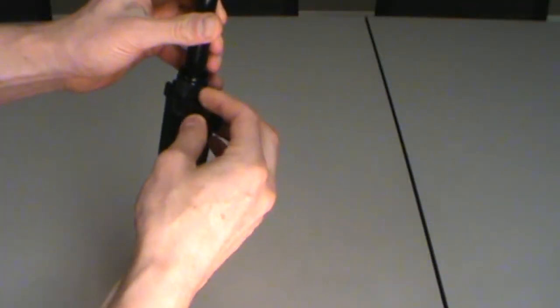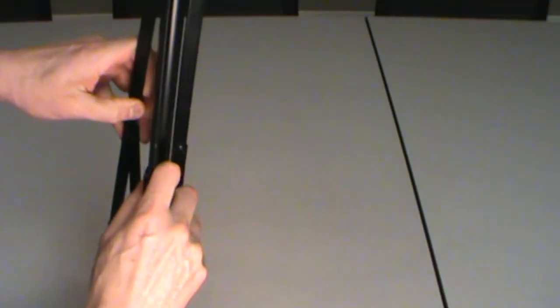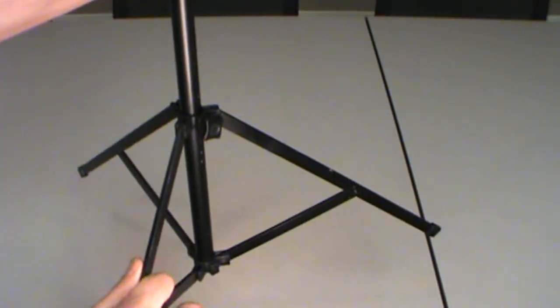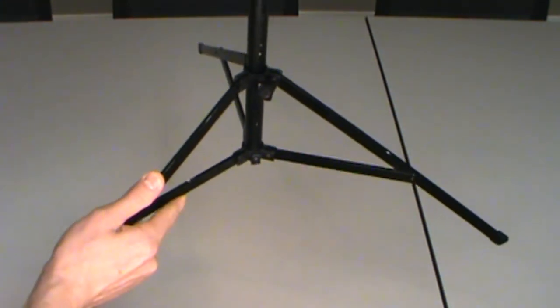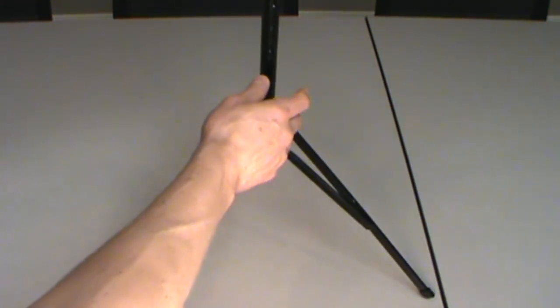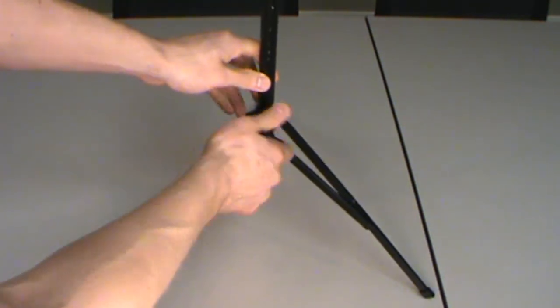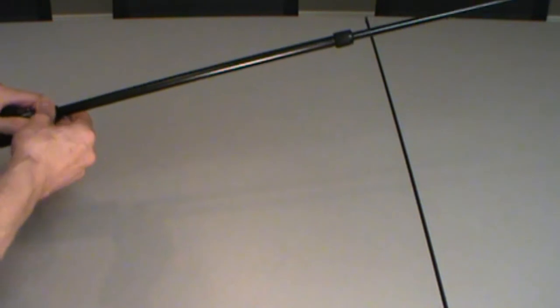First, set up your tripod. Extend the legs at the base and tighten the set screw so the legs don't slip. Now extend the tripod to its full height.